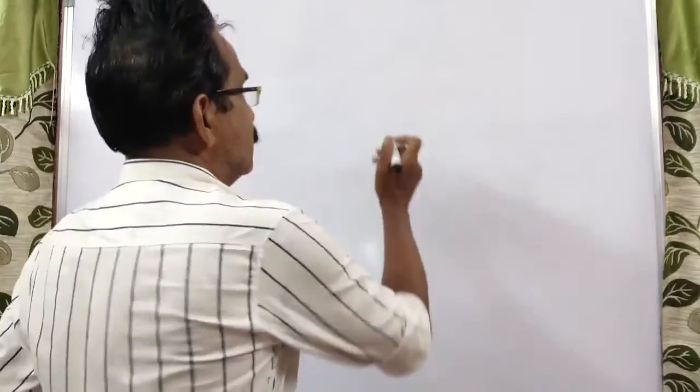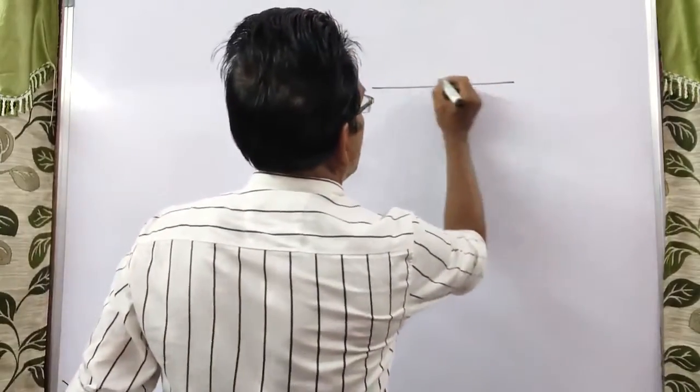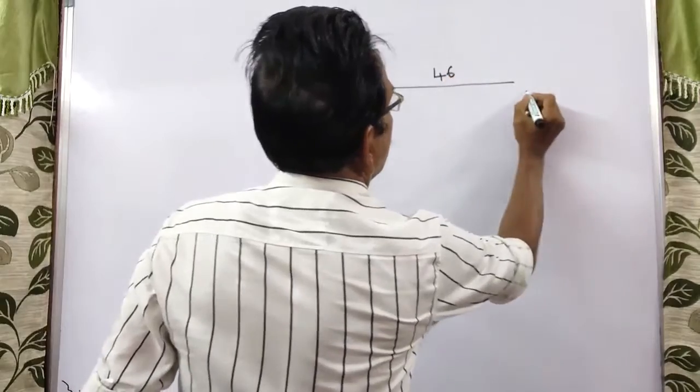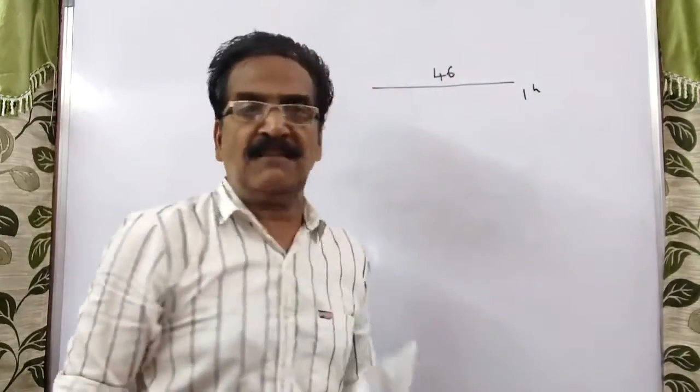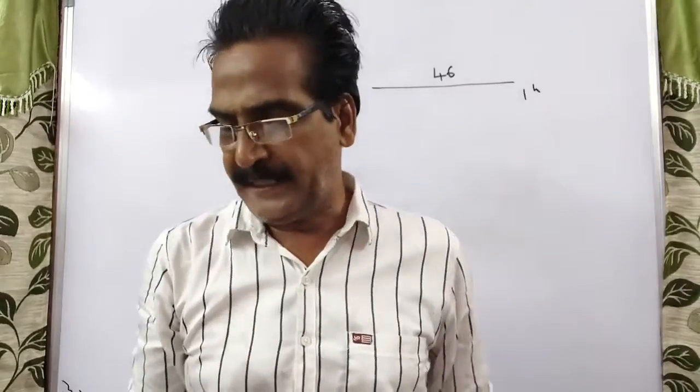A train is scheduled to cover the distance between two stations 46 kilometers apart in one hour. So 46 kilometers is the total distance. This should be covered in one hour. That is the scheduled time to cover that 46 kilometers.